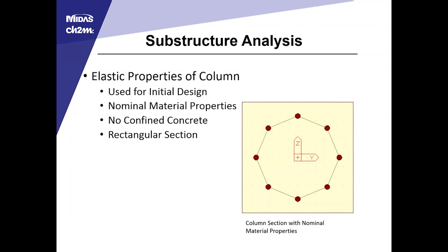For the column properties, in the initial model in MIDAS Civil 3D we used the elastic properties based on nominal material properties: 60 KSI steel, 4.5 KSI concrete. No concrete was assumed to be confined, and we relied on the entire rectangular section.